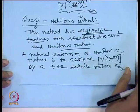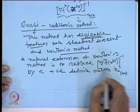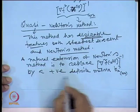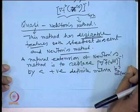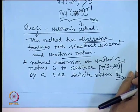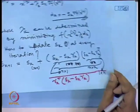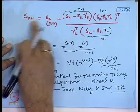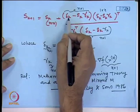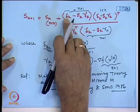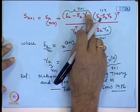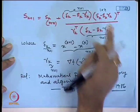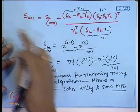We want to replace the Hessian matrix inversion in Newton's method with a positive definite matrix S_k. We have shown that the update expression gives S_{k+1} from S_k, where delta_k is the difference of the decision variable values at two successive iterations, and gamma_k is the difference of the gradients of the objective function at two successive iterations. Now we will derive these expressions.